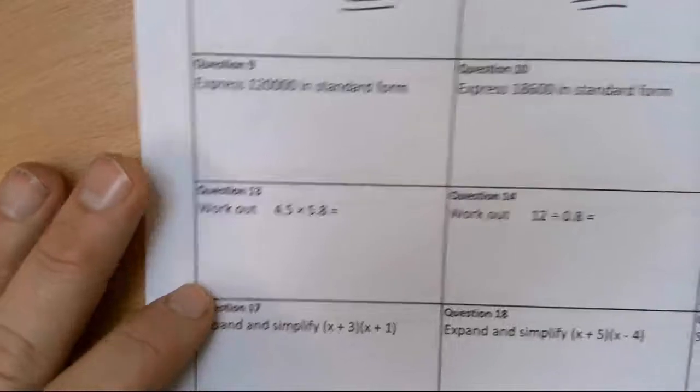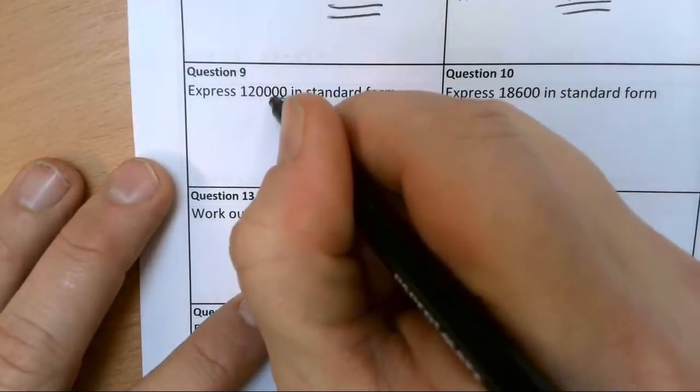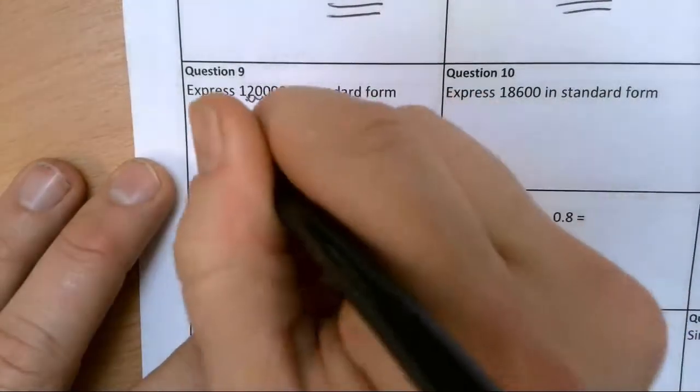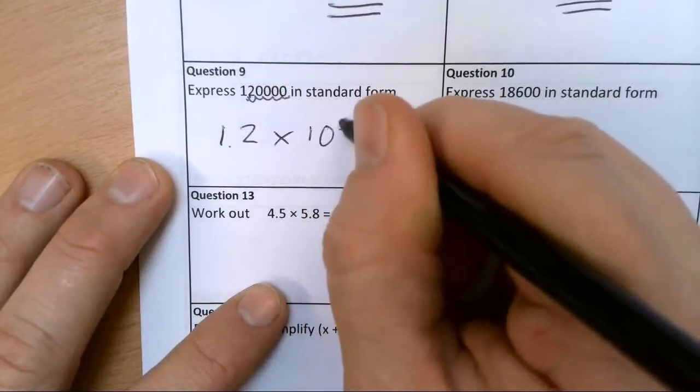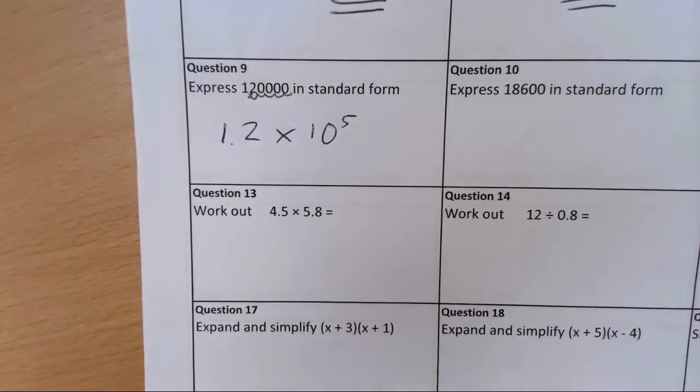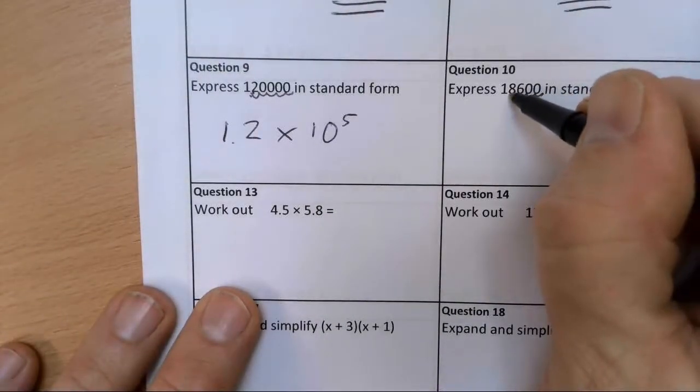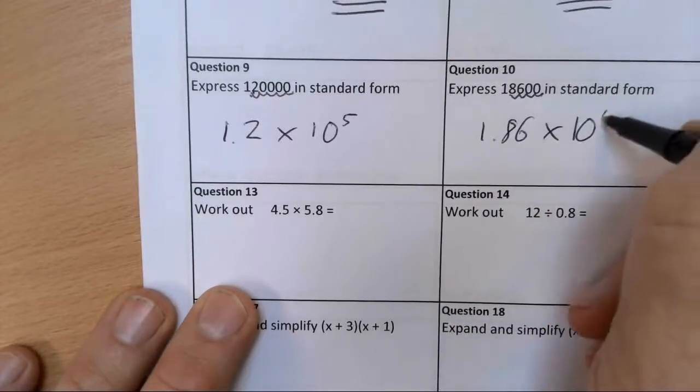Question 9, in standard form. 1, 2, 3, 4, 5, it's going to be 1.2, and I've had to times it by 10 to the power of 5 to get to that position. Question 10: 1, 2, 3, 4, so 1.86 times 10 to the power of 4.